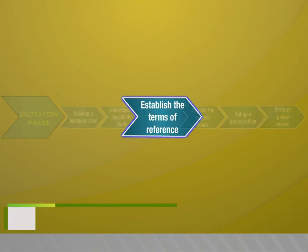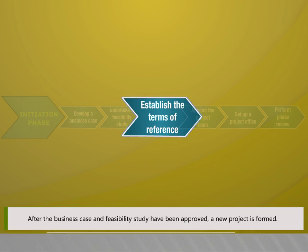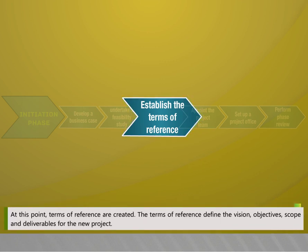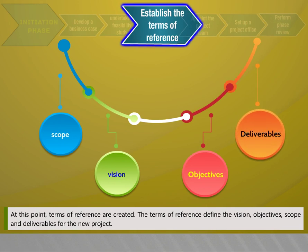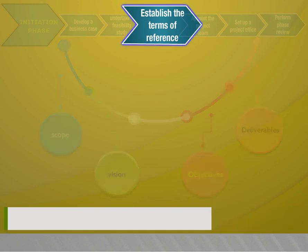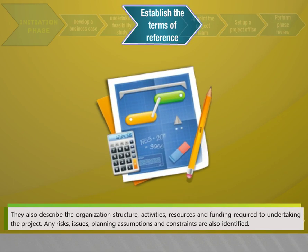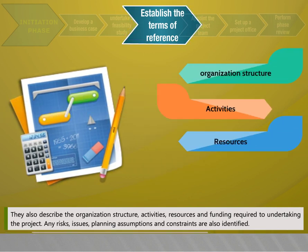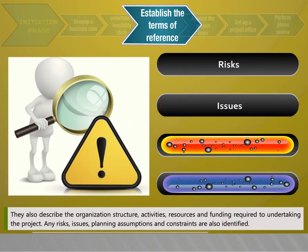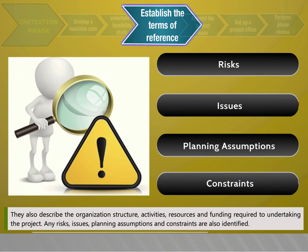After the business case and feasibility study have been approved, a new project is formed and terms of reference are created. The terms of reference define the vision, objectives, scope, and deliverables for the new project. They also describe the organization structure, activities, resources, and funding required to undertake the project. Any risks, issues, planning exceptions, and constraints are also identified.